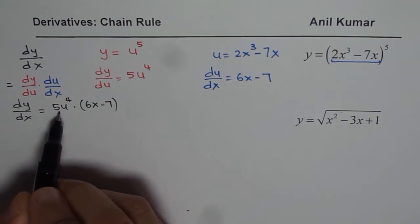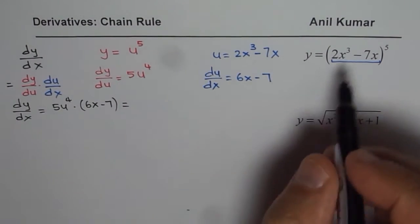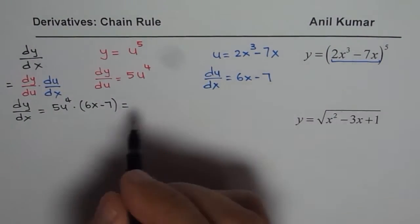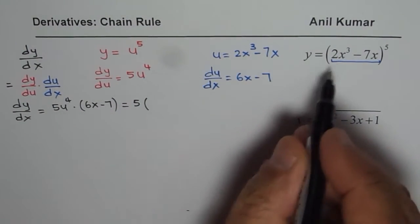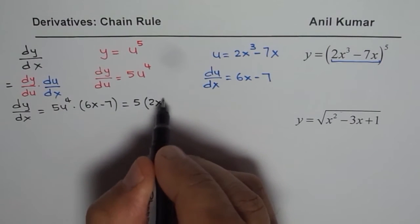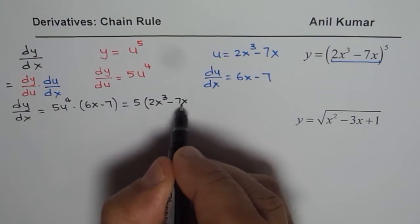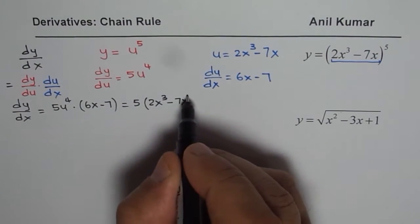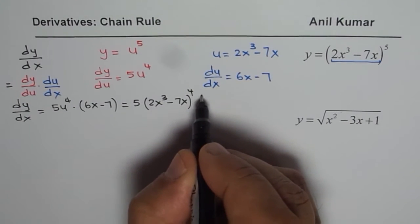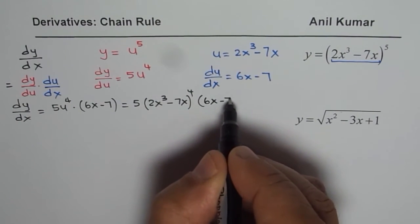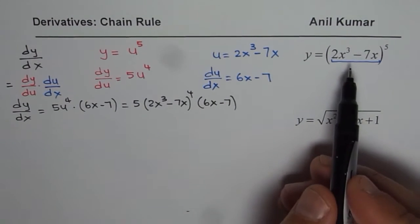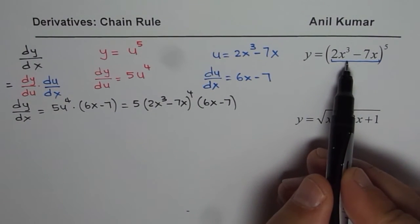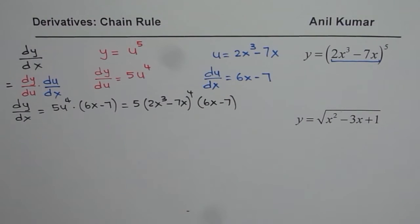And now, you can substitute u with 2x³ - 7x. So, we get 5 times (2x³ - 7x)⁴ times (6x - 7). That becomes the derivative of the given function with respect to x. I hope the steps are clear.